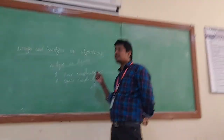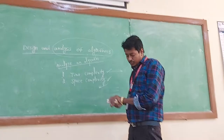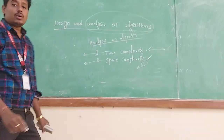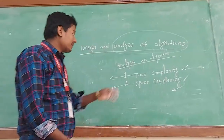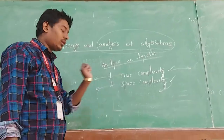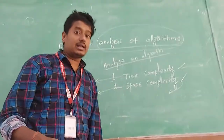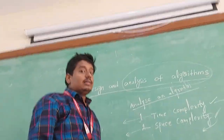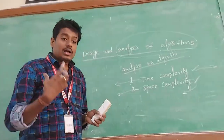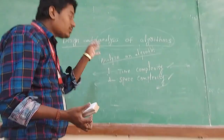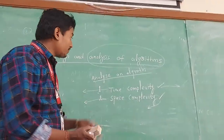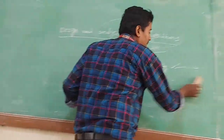The algorithm analysis is mainly dependent on time complexity and space complexity. Time complexity means the time it takes to run an algorithm or a program. Space complexity means the memory or space it takes to store the variables or the program's required parameters. Based on these two, we can determine whether a particular algorithm is efficient.